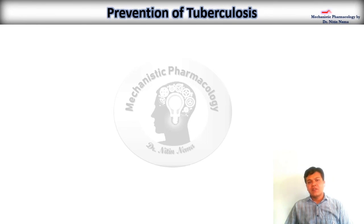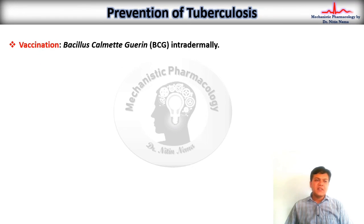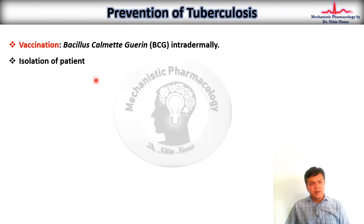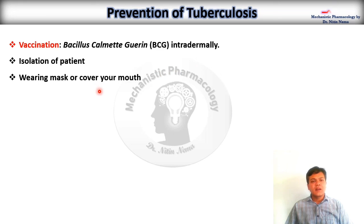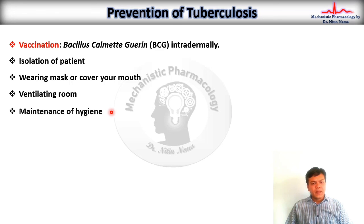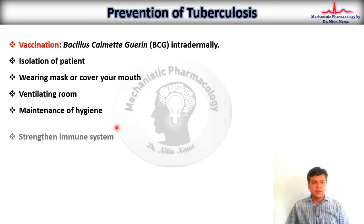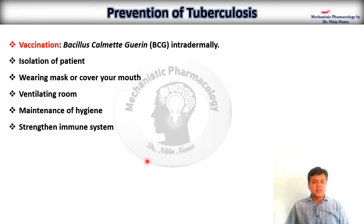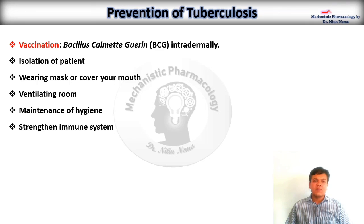Regarding prevention of tuberculosis — vaccination is one method of prevention; BCG (Bacillus Calmette-Guérin) is given by intradermal route. Second is isolation of the patient. Third, wearing a mask or covering your face with cloth. Fourth, ventilating the room. Maintenance of hygiene is another way of prevention. Lastly, strengthening the immune system — bacterial infections occur due to a weakened immune system; if the immune system is proper, no bacterial or viral infection can happen.